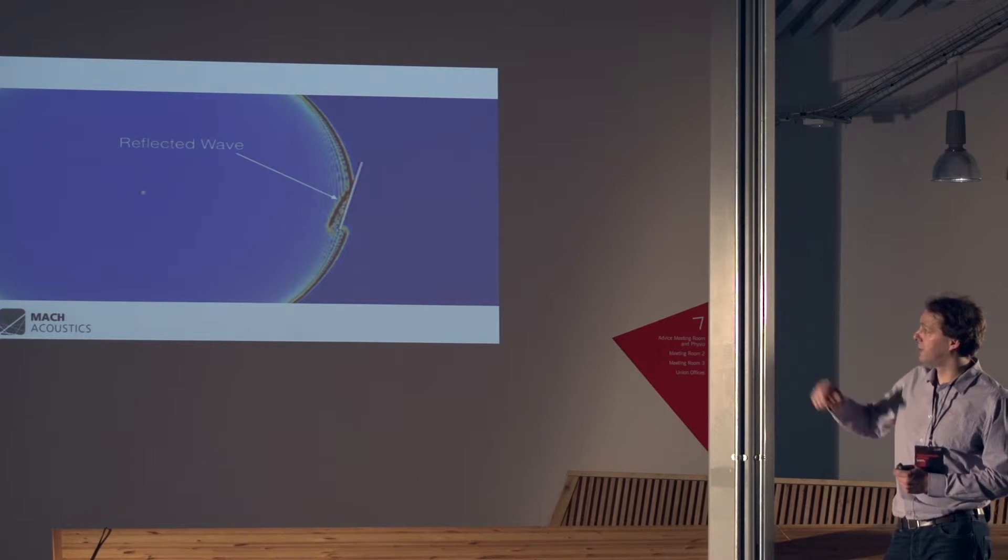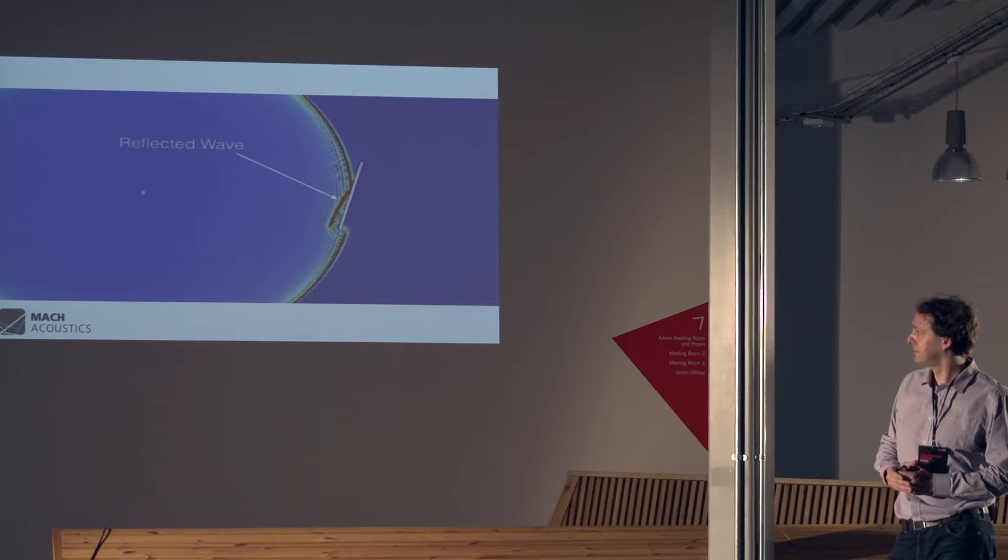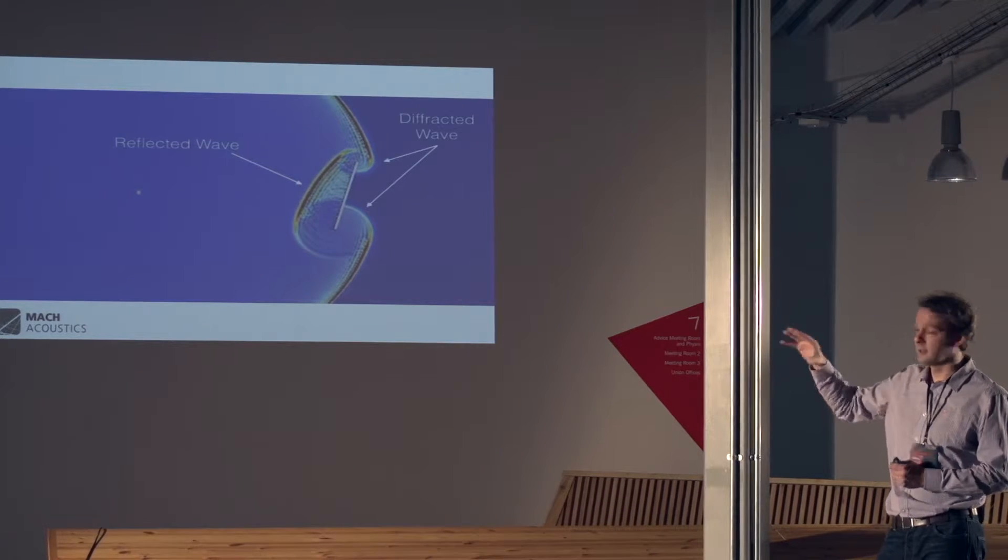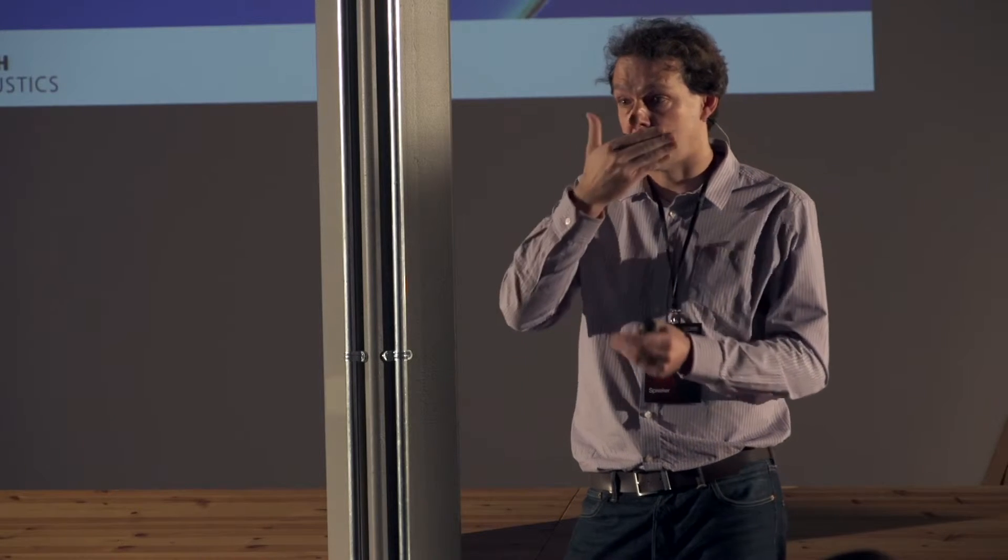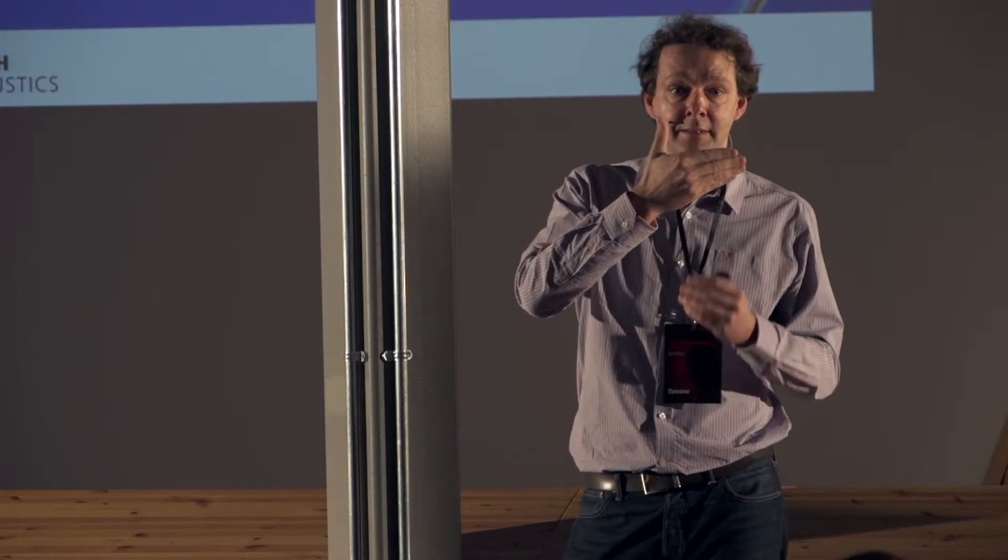And we can now see how it reflects off a structure. And more importantly, diffracts around the structure. This is where the complex math comes in. It's how the sound bends around an object. If you can't see my mouth, you can still hear it. And the reason for that is that sound is bending around my hand.